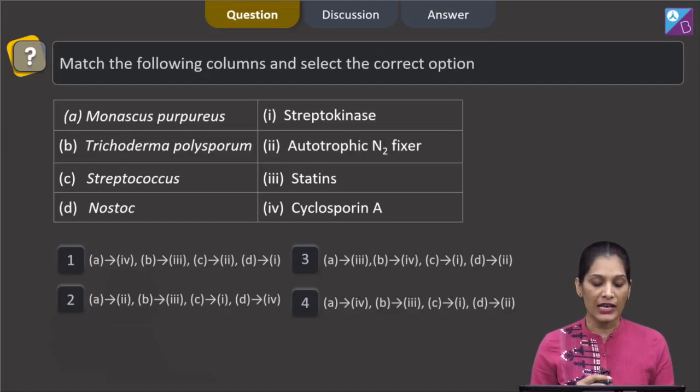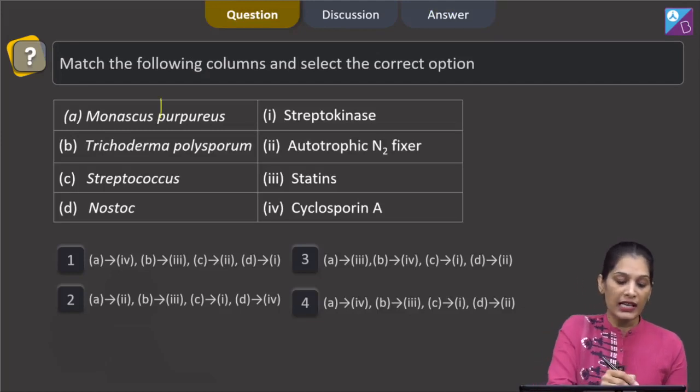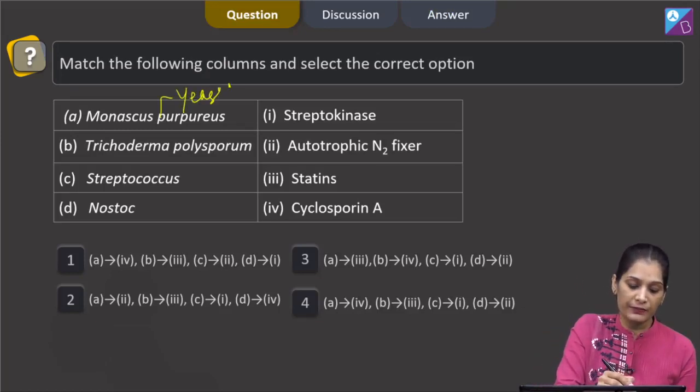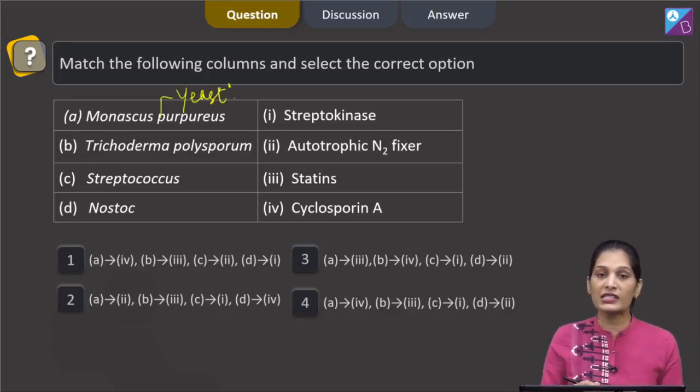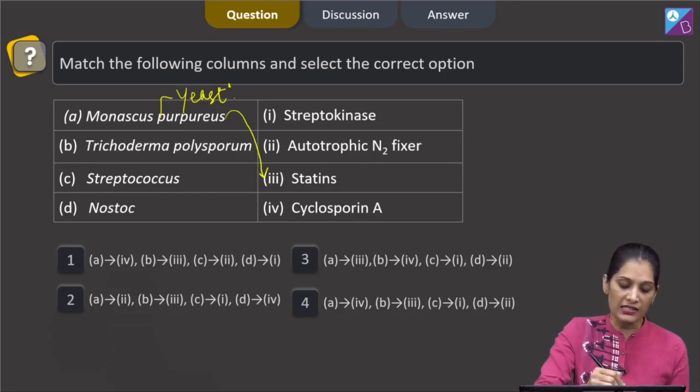Match the following columns and select the correct option. Monascus purpureus. Monascus purpureus, it is yeast and from this species we can get the statins.